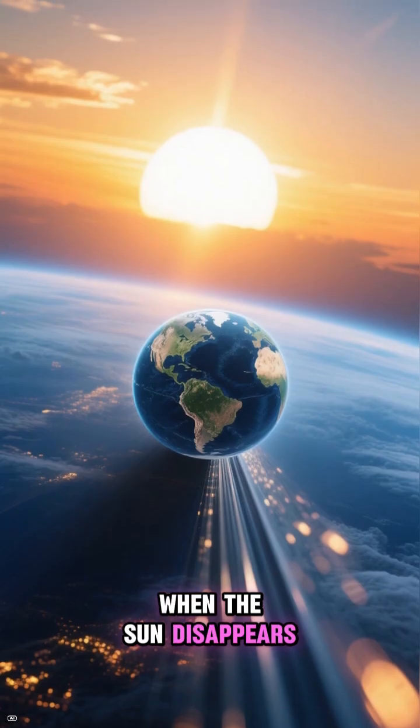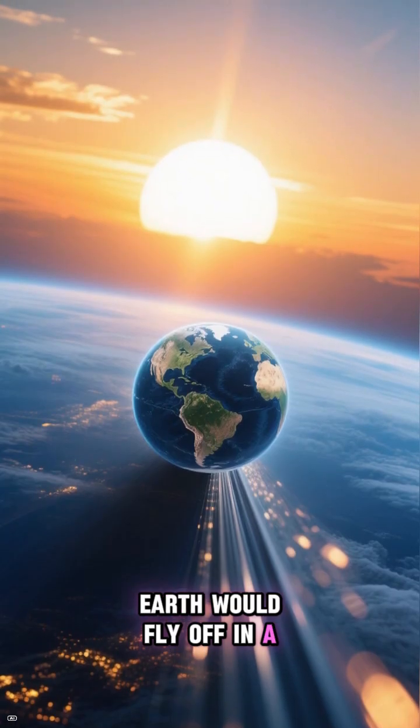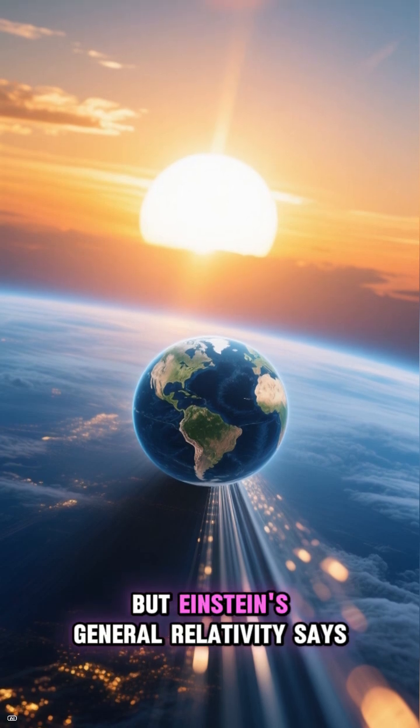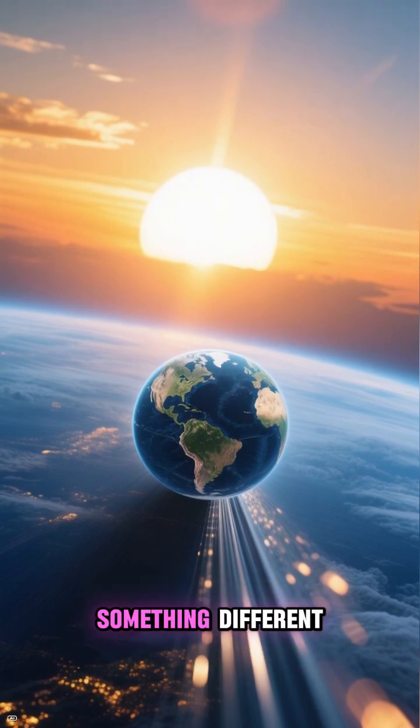When the sun disappears, Earth would fly off in a straight line. But Einstein's general relativity says something different.